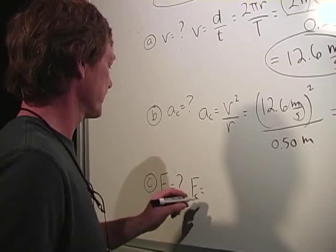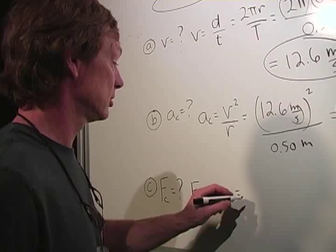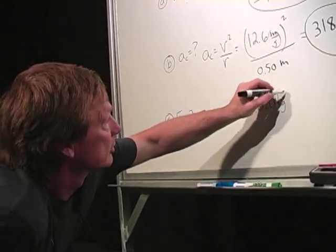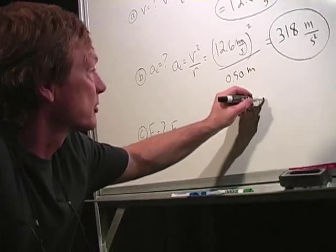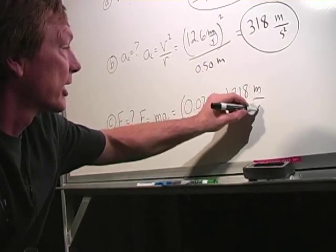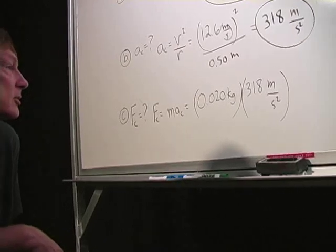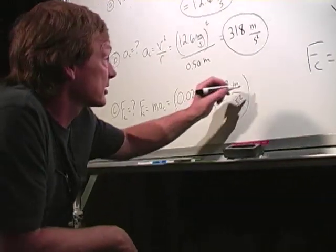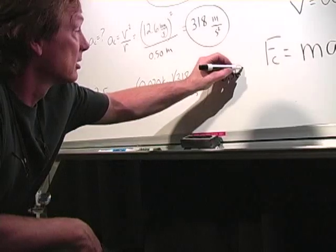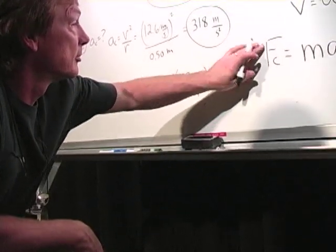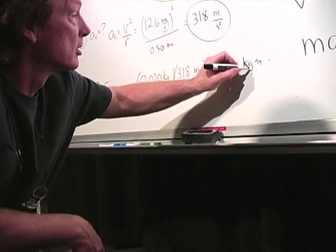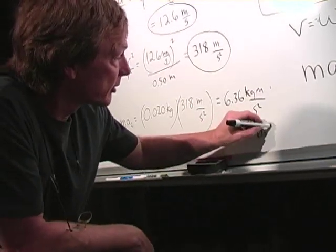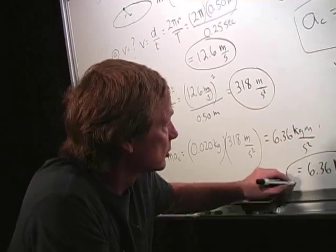The centripetal force is going to be equal to the mass times the centripetal acceleration, which in this case is 0.020 kilograms times 318 meters per second squared, and that's going to be 6.36. You check and make sure that's right. That's kilogram meters per second squared. And a kilogram meter per second squared, that's a newton. And so this is 6.36 newtons.